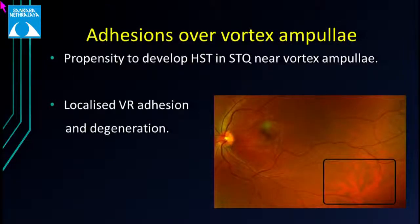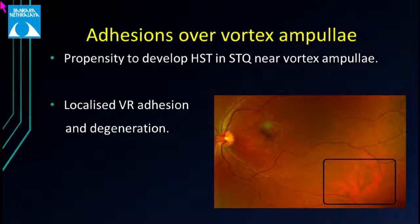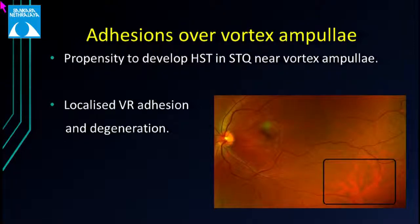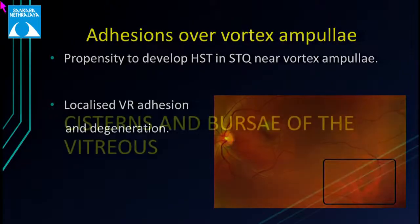We can also have adhesions around the vortex ampulla. The rapid filling and emptying of the vortex ampulla during rotational eye movements can lead to localized vitreoretinal degeneration around it, along with vitreous changes — liquefaction or adherence. This gives a propensity to develop horseshoe-shaped tears, especially around the superotemporal quadrant vortex vein.